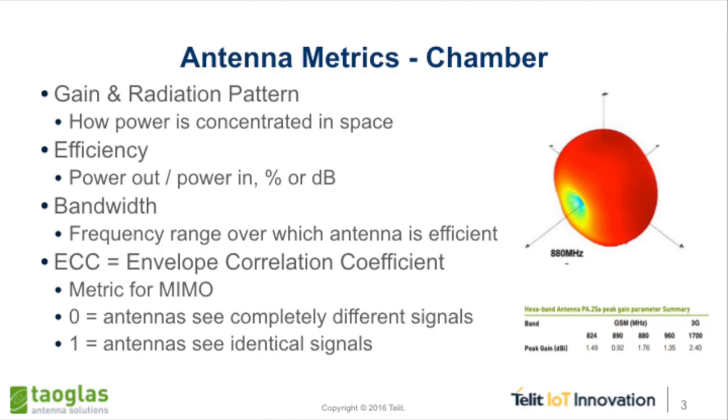Bandwidth is the frequency range over which the antenna is effective and efficient. That really comes back to what you'll see in this return loss measurement, which I'll discuss in a minute. It boils down to: what bands can I use this for, what radios can I use this for? A lot of times it's not obvious. We sell a lot of cellular antennas to people doing 915 MHz ISM band solutions because our cellular antennas are really, really good, and the bands overlap.